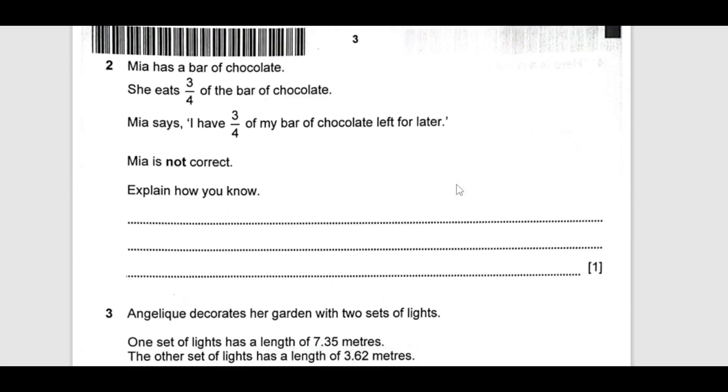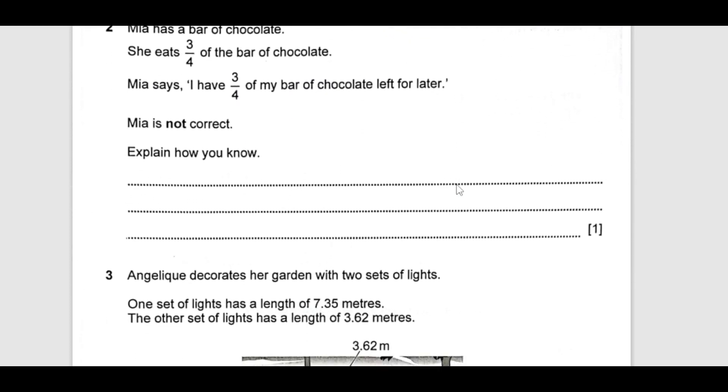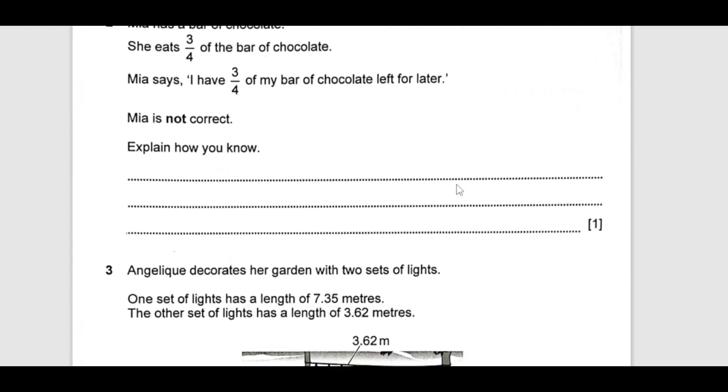Now, the next one. Mia has a bar of chocolate. She eats 3 by 4 of the bar of chocolate. Mia says, I have 3 by 4 of my bar of chocolate left for later. Mia is not correct. Explain how do you know? If you can see, she said like she eats 3 by 4.